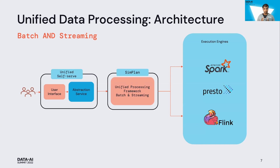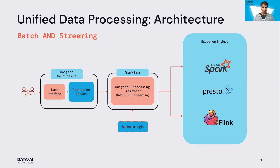Our solution to this is a unified processing framework. The architecture has one unified self-serve UI powered by a unified processing framework, which abstracts Spark, Presto, Flink, or any other execution engine. Your processing logic is implemented once and applied for both batch and streaming processing needs. Basically, you write the business logic once and the framework applies that logic under different execution engines.